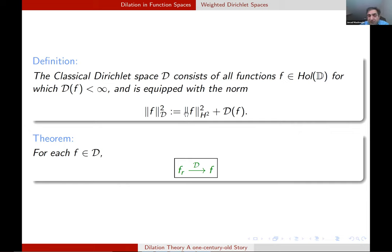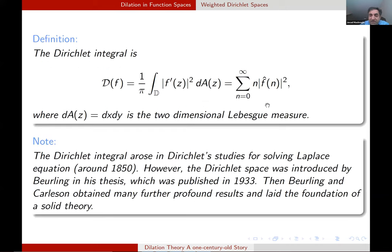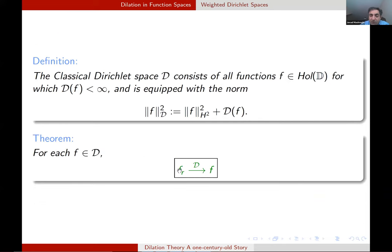Again, to take care of the constant, we add a term here, either the absolute value of F at 0 or the norm of F in H^2. And something to take care of constant. And we obtain a norm. It is very easy based on this formula to see that F_R goes to F under this norm. That's, I mean, simply a monotone convergence theorem. Even bounded convergence theorem of Lebesgue can be used to their equivalent.